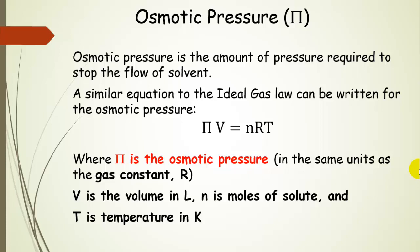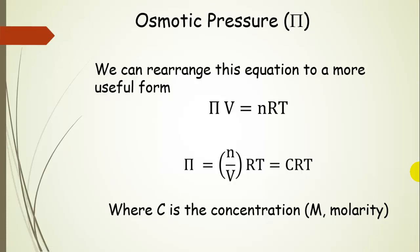Osmotic pressure is the amount of pressure required to stop that flow of solvent from lower concentration to higher concentration. We can write an equation very similar to the ideal gas law for osmotic pressure. If we didn't have pi for osmotic pressure, we would have PV = nRT, because pi represents osmotic pressure. V is the volume in liters, n is the moles of solute, R is the gas constant (ensure units match), and T is the temperature in Kelvin. Rearranging, we can create a concentration unit — moles in a volume of solvent — so osmotic pressure equals the concentration of the solution times R times T, where concentration is in molarity.